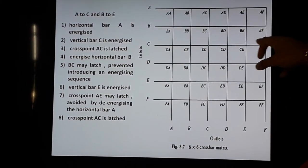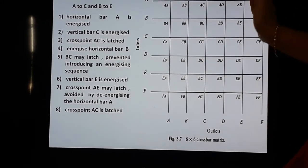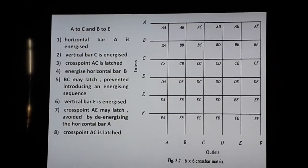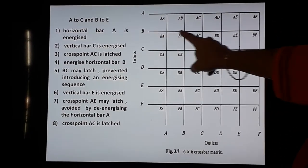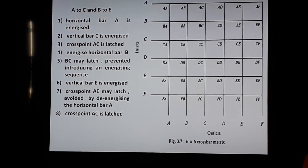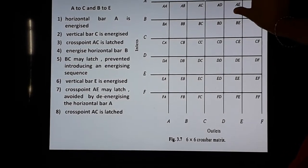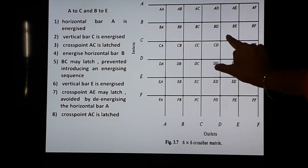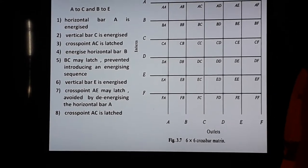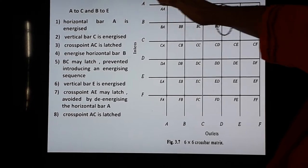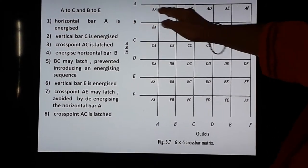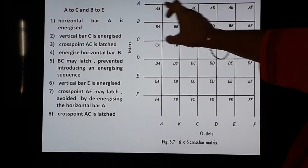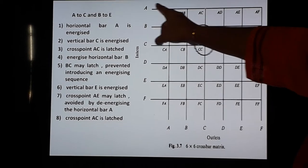Now for B and E to communicate, we need to energize vertical bar E. As we energize vertical bar E, horizontal bars A and B are both energized. So AC is already latched, but AE might also get latched, which we do not want — we want only BE to be latched. To avoid the latching of contact point AE, after AC is latched, we de-energize horizontal bar A. So as we de-energize A, AE will not get latched, and the only contact point that will be latched is BE.